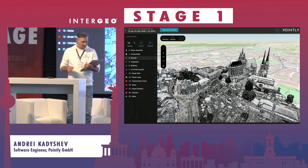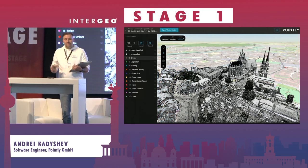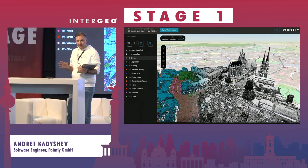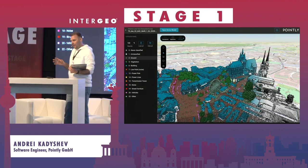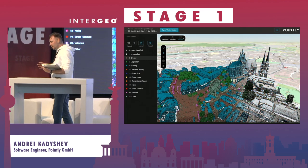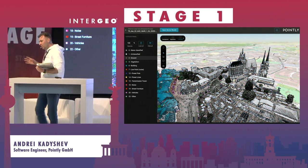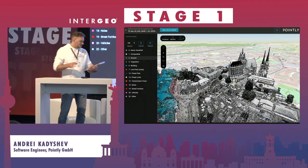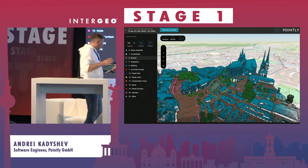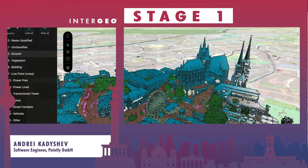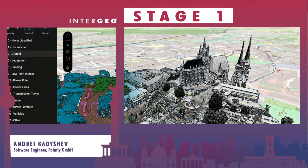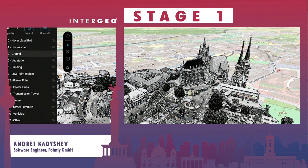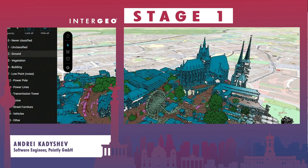While point clouds contain an enormous amount of information, a raw point cloud is still like having a book with jumbled letters. Classification allows you to organize all this data, making interpretation and further analysis much easier.